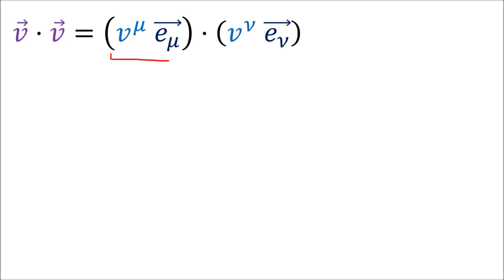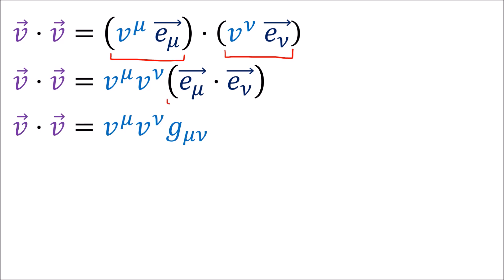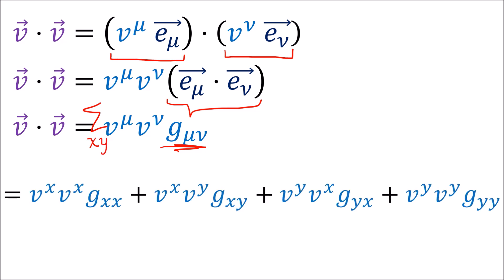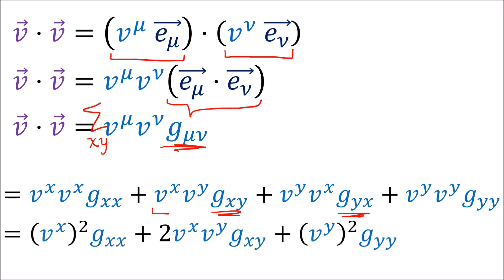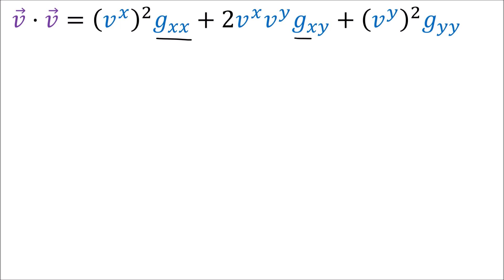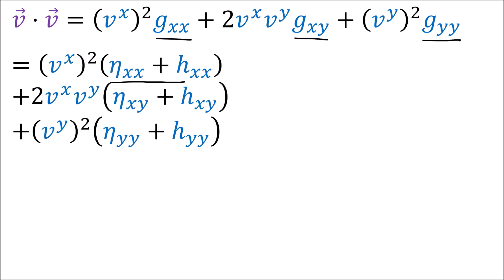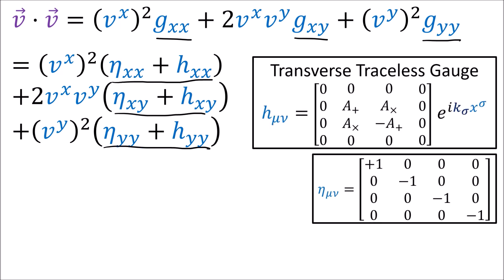So all we need to do to get the proper distance between these two geodesics is to calculate the dot product of v with itself. We can expand the vector v as a linear combination of basis vectors, and the dot product of the basis vectors becomes the metric tensor components g. This sum would normally be over all four spacetime components, but since the displacement vector is only in the xy plane, we only sum over x and y. And since the metric tensor is symmetric, g_xy and g_yx are the same, so we can combine these into two times the same term. For each of these three terms, the metric g is the flat metric eta plus the metric perturbation h.